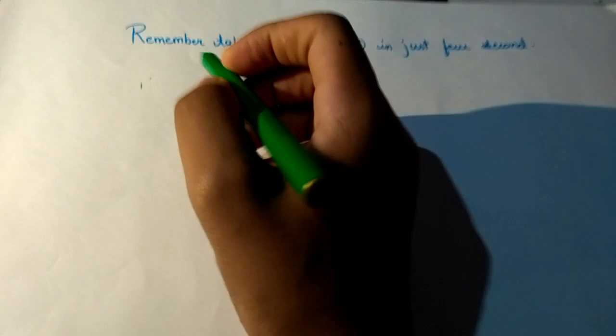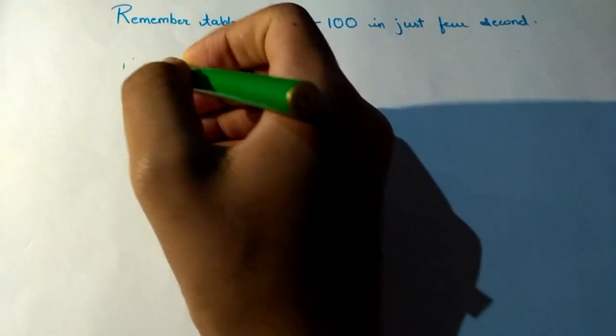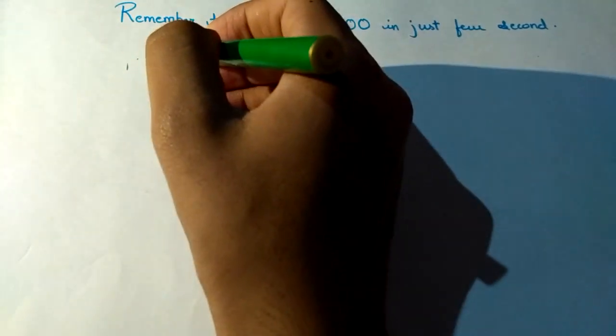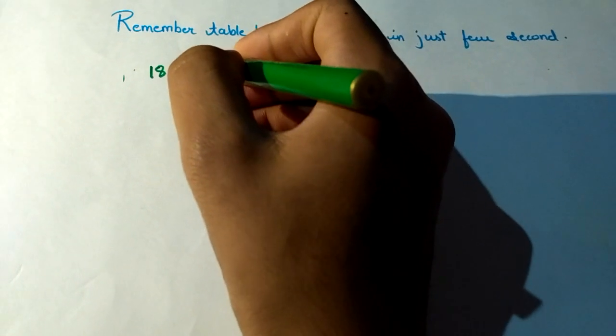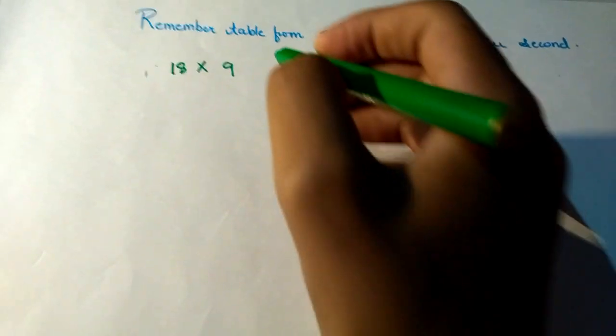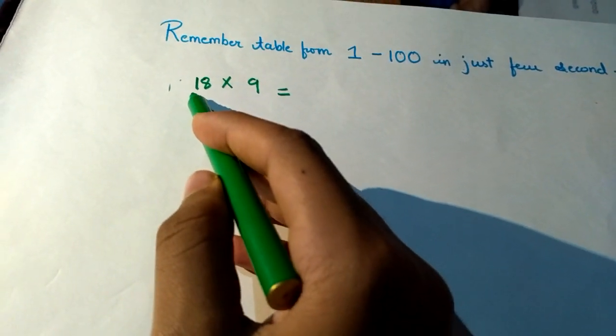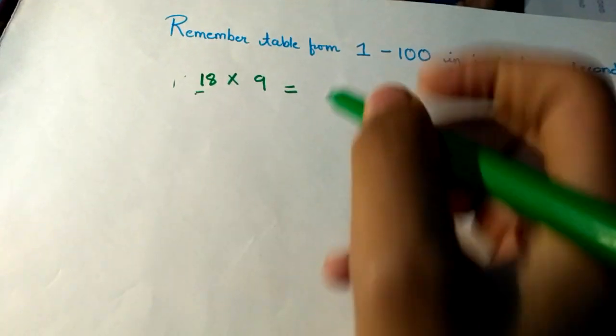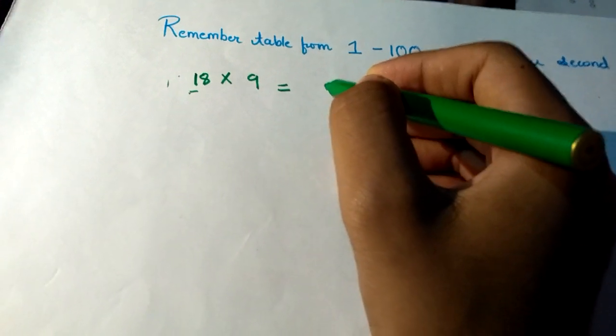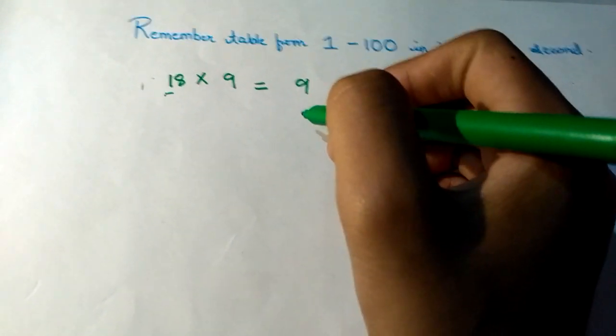Now I will take one example, that is 18 × 9. So friends, how to solve this? You multiply the first digit, that is 1 × 9, and write here that is 9.